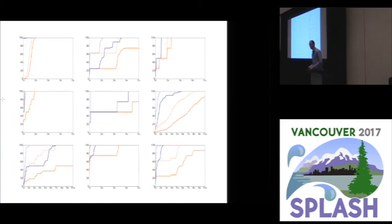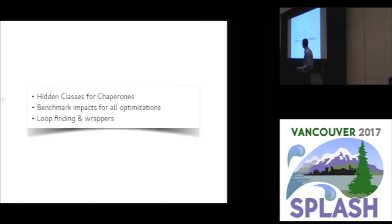So here's all the rest of the benchmarks that we present in the paper with the same color scheme. You can see that we're going from the red lines to the blue lines, and in every case, we're moving way up by switching to our new virtual machine. In the paper, you can see information about hidden classes for chaperones. We've reported benchmark results for the impact of each optimization we perform, and we talk about the important interaction between finding loops in a just-in-time compiler and wrappers that might interfere with the connections that you see in a loop.